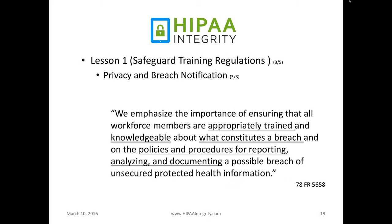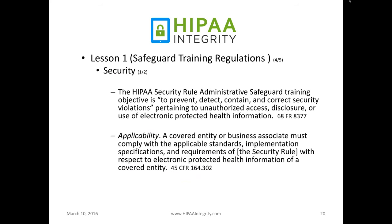In the omnibus rule preamble, the statement reads: 'We emphasize the importance of ensuring that all workforce members are appropriately trained and knowledgeable about what constitutes a breach and on the policies and procedures for reporting, analyzing, and documenting a possible breach of unsecured protected health information.' We believe this can be accomplished more simply than having everyone know everything about the content of the particular regulations. The security training rules, dating back to 2005, are to prevent, detect, contain, and correct security violations pertaining to unauthorized access, disclosure, or use of electronic protected health information. The privacy and breach notification rules cover protected health information in hard copy, oral, and electronic format, while the security rule covers it only in electronic format.